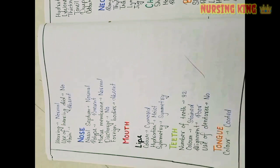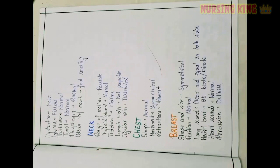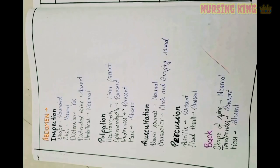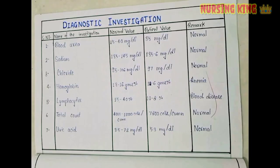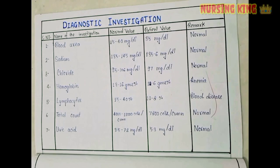Then nose, mouth, lips, teeth, tongue — every each and every portion you have to write, including any abnormalities. Chest and breast, everything you have to write. Then abdomen — inspection, palpation, percussion, auscultation — any tenderness or abnormalities present or not.